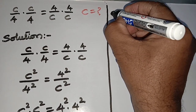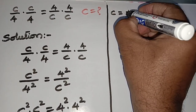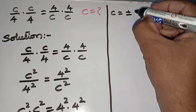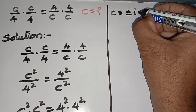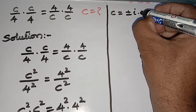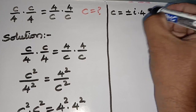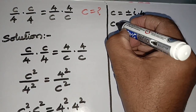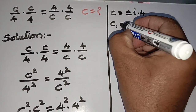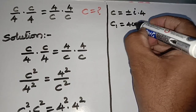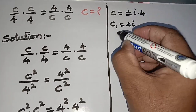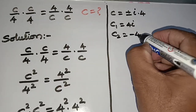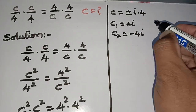So c = ±√(-1) · 4. Since √(-1) = i and √(4²) = 4, we get two values: c₁ = 4i and c₂ = -4i.